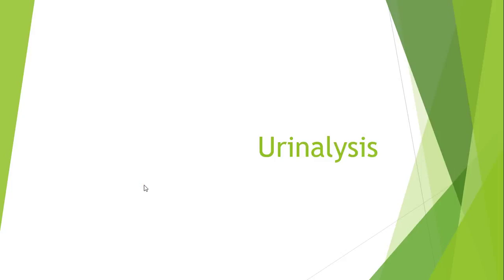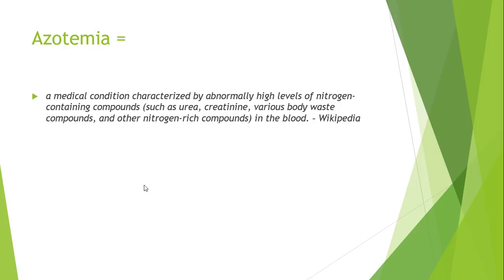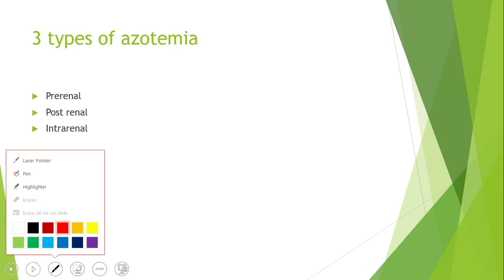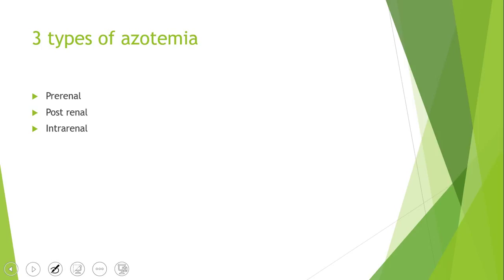This is a lecture on urinalysis. First, we're talking about azotemia, a medical condition characterized by abnormally high levels of nitrogen-containing compounds such as urea, creatinine, various body waste compounds, and other nitrogen-rich compounds in the blood. There are three types of azotemia: pre-renal, post-renal, and intra-renal — basically things before your kidney, things after your kidney, and things in your kidney.